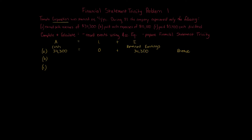Next, transaction B: paid cash expenses of $15,100. Cash goes down by $15,100 — it's assumed to be cash since we're told these are cash expenses. No liabilities affected. For equity, retained earnings goes down by $15,100 because expenses reduce retained earnings. Our equation balances.